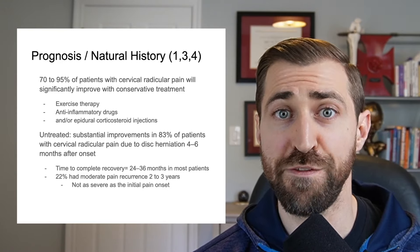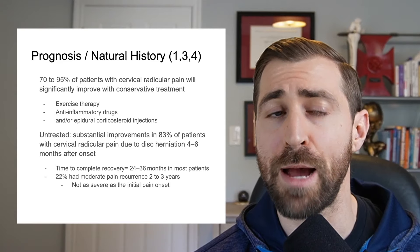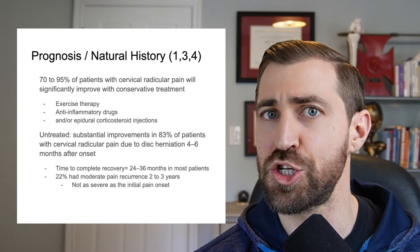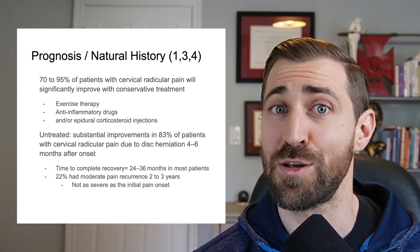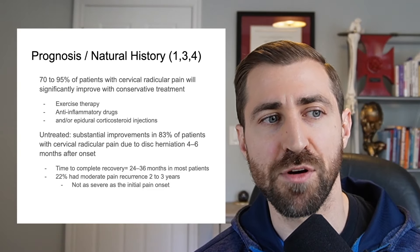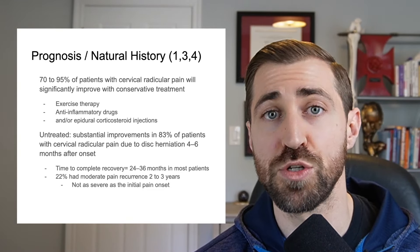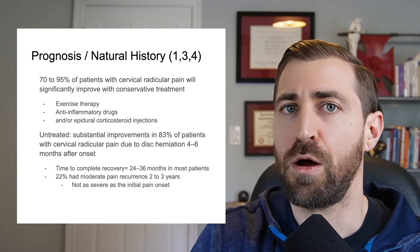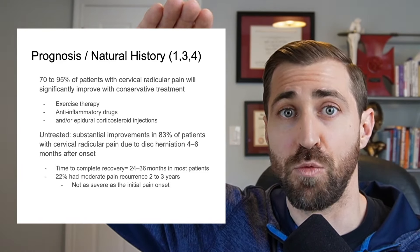When folks are untreated — no physical therapy, no steroid injections, no NSAIDs — substantial improvements are found in 83% of patients with cervical radicular pain due to disc herniation four to six months after onset. However, the time to complete recovery was around 24 to 36 months for most patients. Despite getting better fairly rapidly in the first few weeks to months, it takes a substantial period of time to get all the way back to baseline. Also, 22% of patients had a recurrence described as moderate — not as bad as the initial exacerbation, but flare-ups along the healing journey are normal.